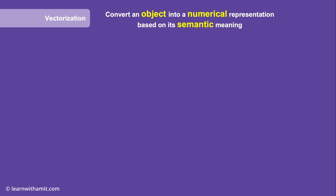The way objects are converted to numbers is based on their semantic meaning — that means their actual real-life meaning, rather than just how they are spelled or phrased in a particular language.